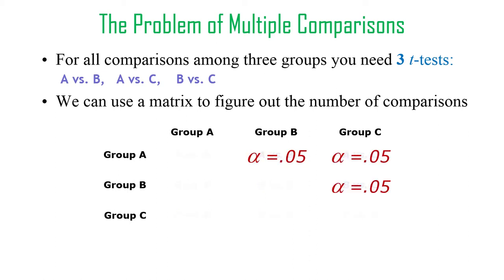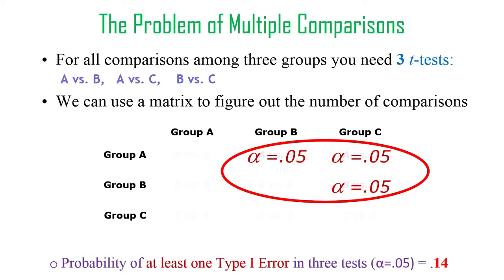There's three possible t-tests that you could compare. Each of those t-tests will have an alpha level of 0.05. What's the probability of at least one t-test erroneously finding that the null hypothesis is false, if in fact the null hypothesis is really true? It turns out that that probability is 0.14. So you've got three t-tests. You think your alpha is 0.05, but across all the tests, the family-wise error rate, or sometimes called the experiment-wise error rate, has risen to 0.14.